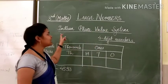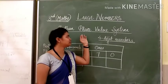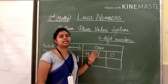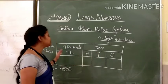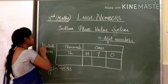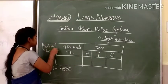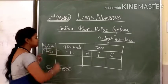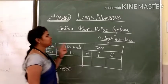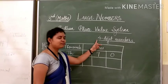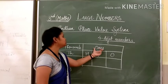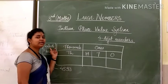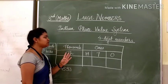According to the Indian place family system, how to write the 4-digit numbers — this I will tell you today. For this, we will come first to the periods and then to the places. In 4-digit numbers, we will use the 1s period and the 1000s period. So there are 2 periods in 4-digit numbers.